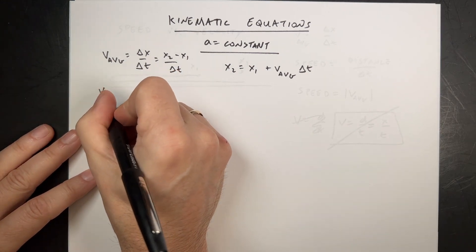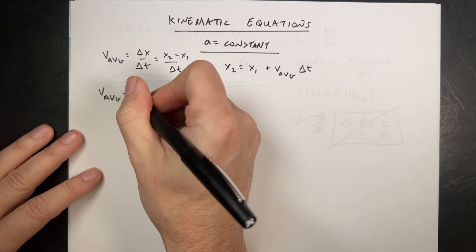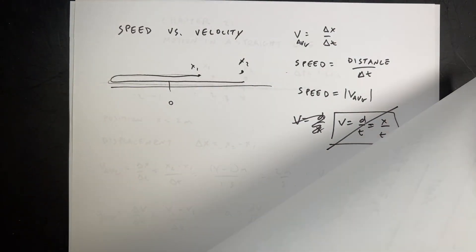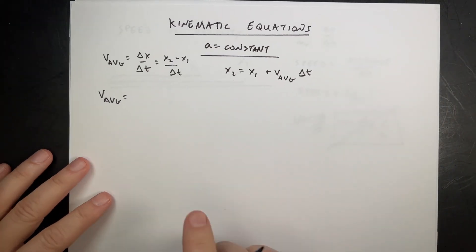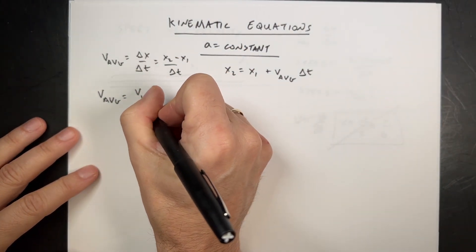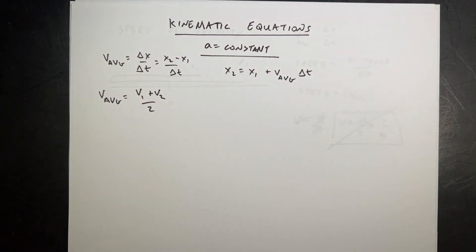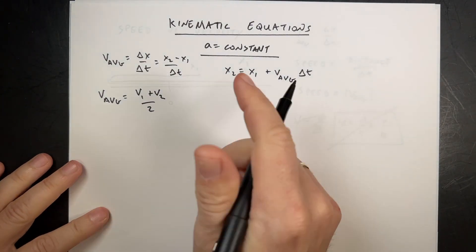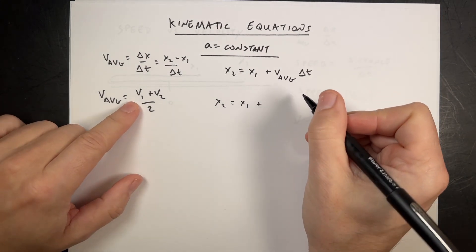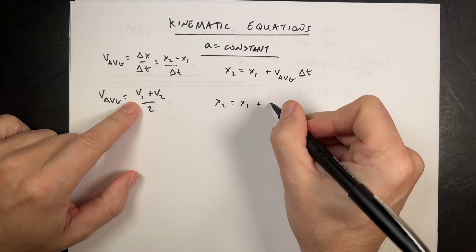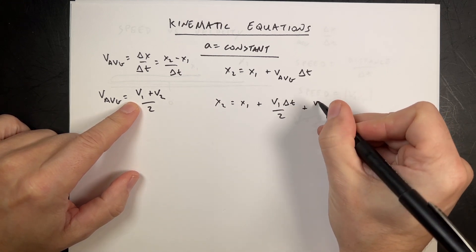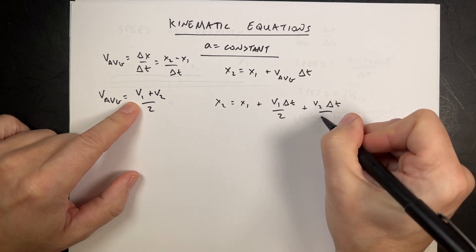I can also say the other definition, v_avg, if the acceleration is constant, then the average velocity is v1 plus v2 over 2. It's literally just an average. So if I put that in over here, I get x2 equals x1 plus v1 delta t over 2 plus v2 delta t over 2.